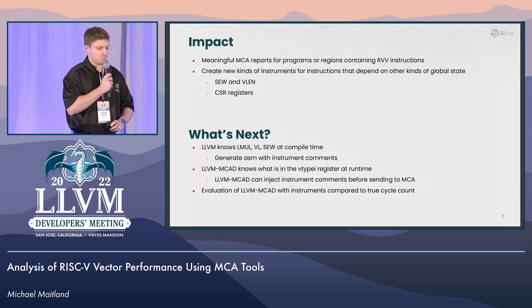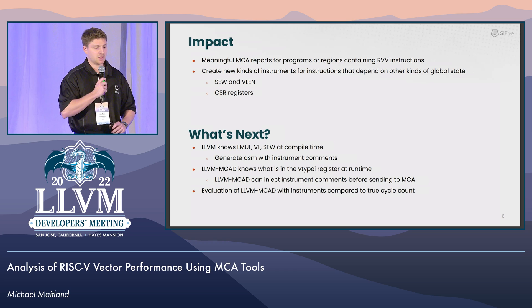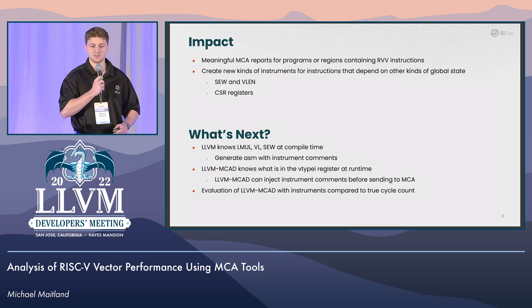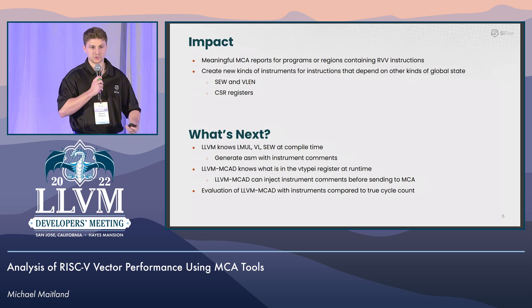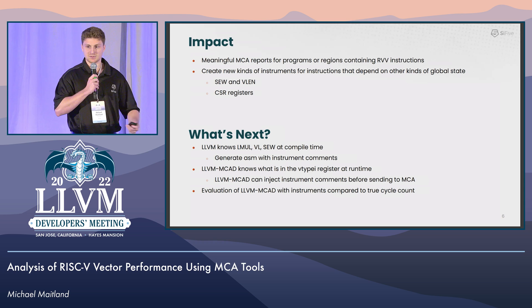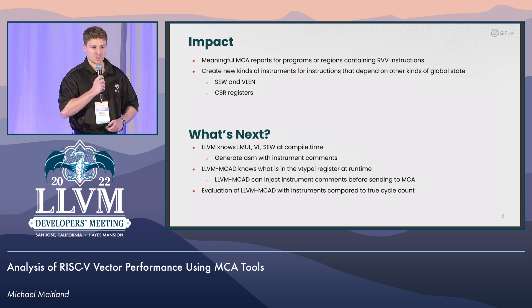So what kind of impact does this have? For people who are working on RISC-V, this means they can use MCA to get meaningful MCA reports for programs or regions containing RISC-V instructions. This lowers the barrier for people who want to get involved in contributing to RISC-V, because they can now see how their optimizations perform using MCA.